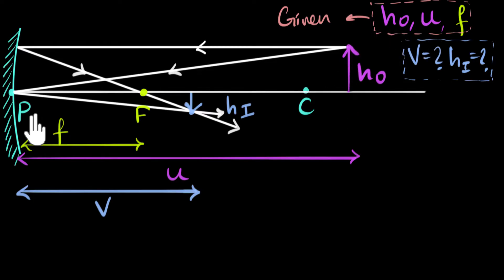HO is given to us and U, that is this distance, is given to us. Can we somehow connect them? That's the question. Can we somehow connect this distance and this height, this distance and this height?